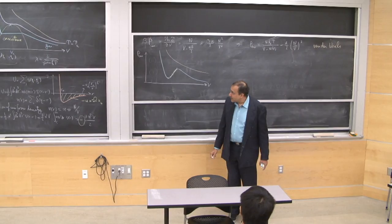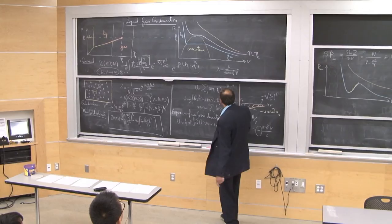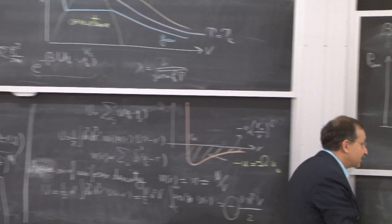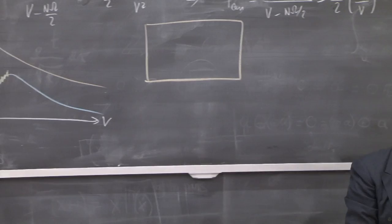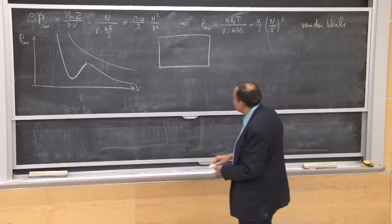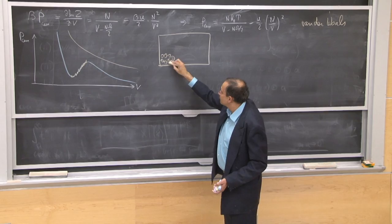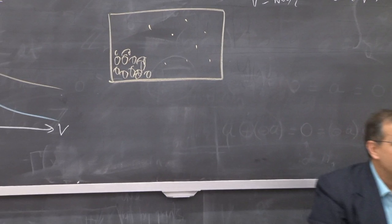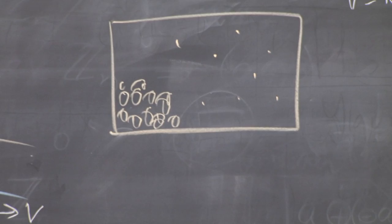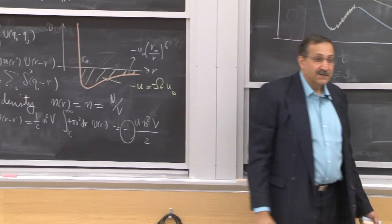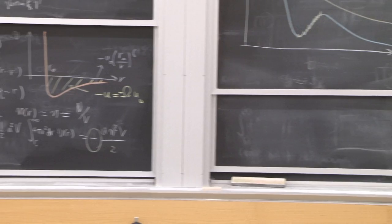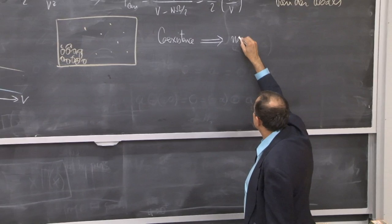A student suggests: the assumption of uniform density fails at a phase transition. Correct. In the region where the Van der Waals equation gives unphysical results, what is actually happening is that some particles condense into a liquid while the rest float around as gas. Coexistence implies non-uniform density, so we cannot use the uniform density approximation there.